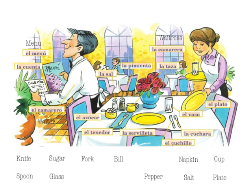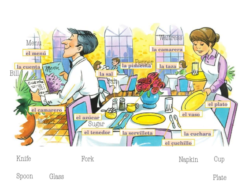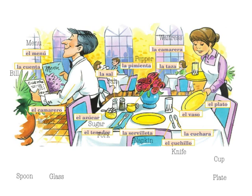El menú — the cognate, you can guess that's menu. Make sure you have that accent on menú. La cuenta is the bill. El azúcar is sugar. La sal is salt. And la pimienta is pepper. Moving on to the place setting: el tenedor is a fork, la servilleta is a napkin, el cuchillo is a knife, la cuchara is a spoon, la taza is a cup, el vaso is a glass, and el plato is a plate.